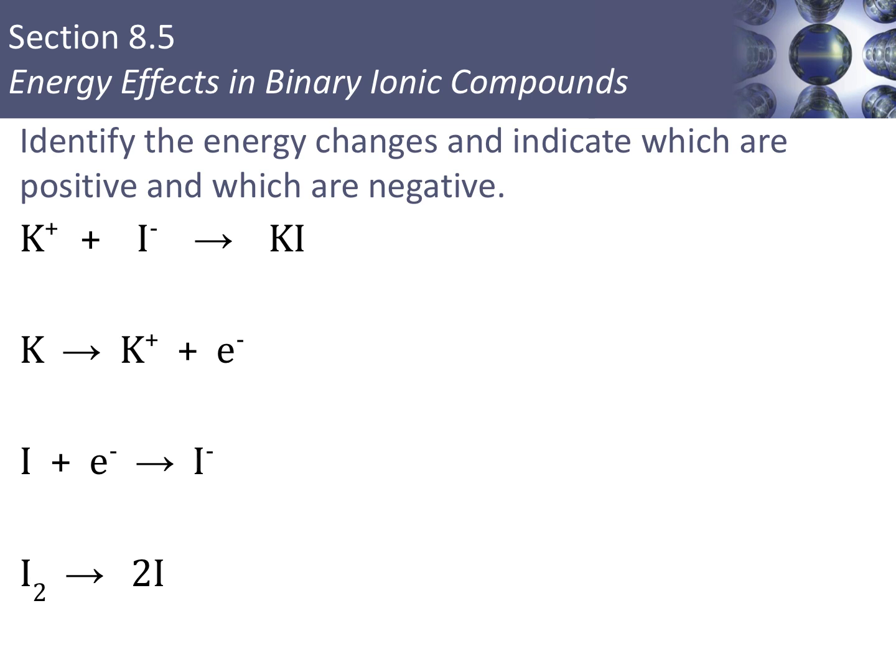Let's compare the different kinds of energy changes we've been talking about recently. At the very top, we have a potassium ion and an iodine ion combining together to make potassium iodide. When bonds are formed, energy is released. Since this is a cation and an anion combining together, we refer to this as lattice energy.